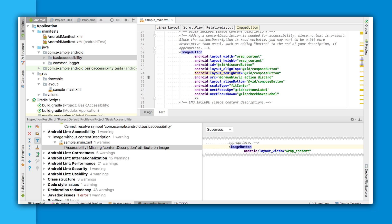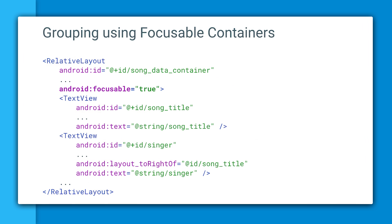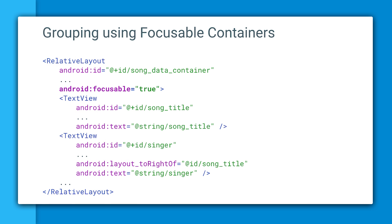Android Lint automatically shows you which UI controls lack content descriptions. To keep TalkBack spoken output tidy, you can arrange related content into groups by using focusable containers. When TalkBack encounters such a container, it will present the content as a single announcement.